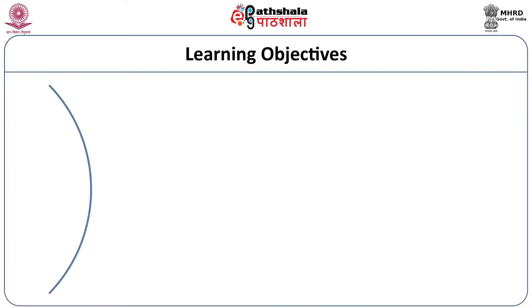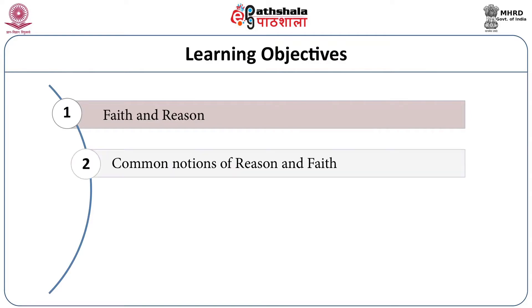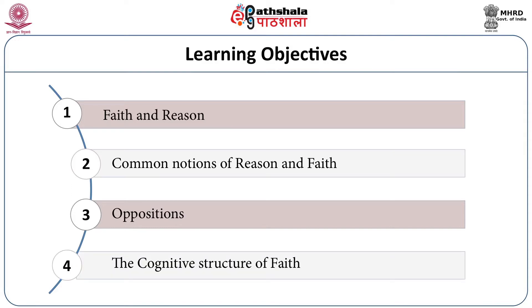In the beginning we shall be discussing the definition of faith and reason. Then we shall be discussing four different criteria on the basis of which the relationship between faith and reason is being drawn. The first is the opposition of faith and reason in the context of logic. The second is in the context of empirical foundation. The third is in the context of the authority of science. So the first section will be dealing with the definition of reason and faith.